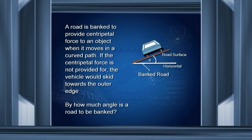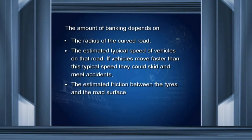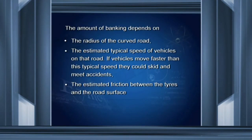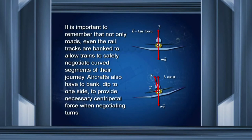What angle should I bank the road to provide the necessary centripetal force? The amount of banking depends on three factors: the radius of the curved road, because the force is mV²/r; the estimated typical speed of vehicles on that road; and the estimated friction between the tires and the road surface. Even planes, when taking a curved path, have to bank — to provide centripetal force so that the plane can safely go around the circular orbit.